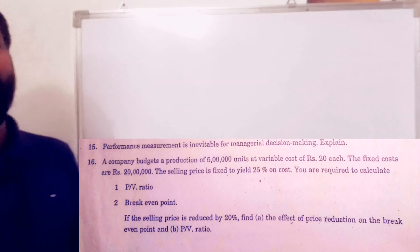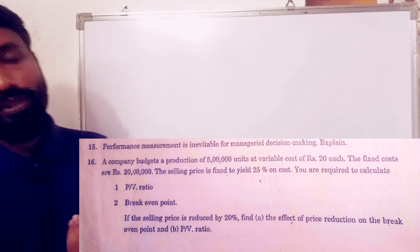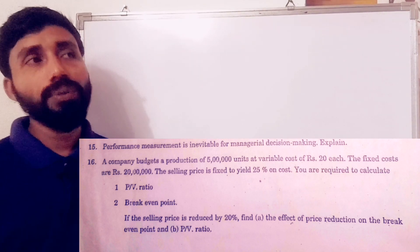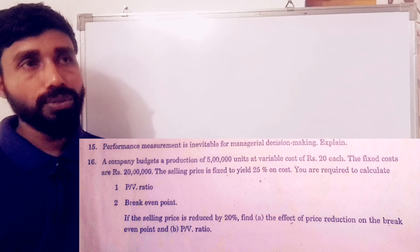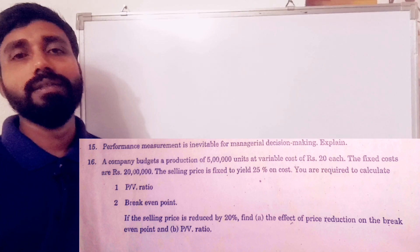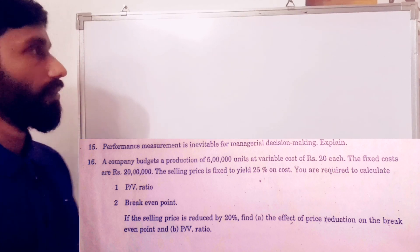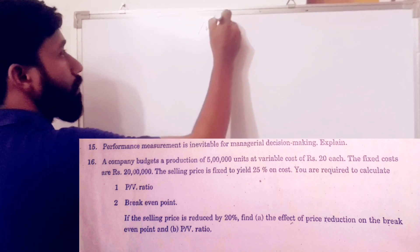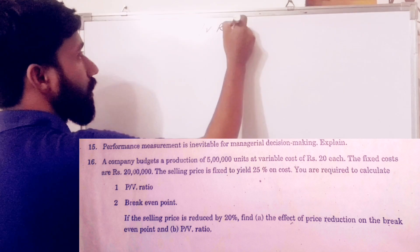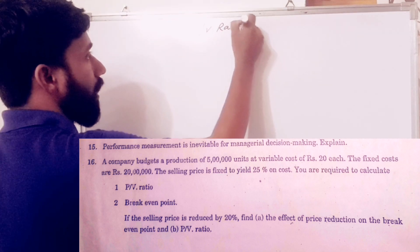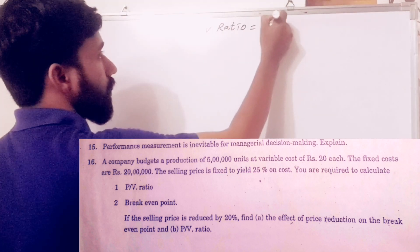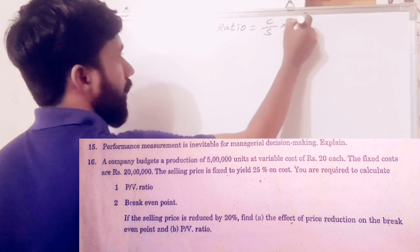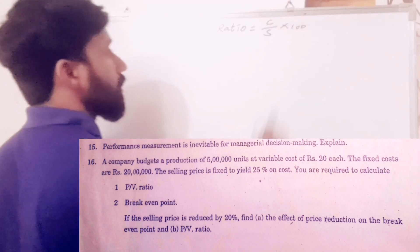PV ratio is equal to contribution divided by sales, into 100.